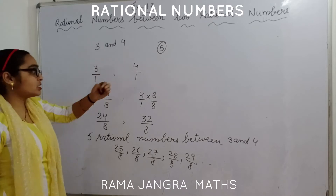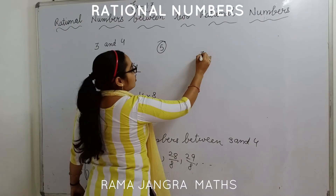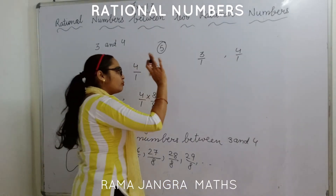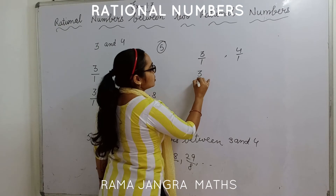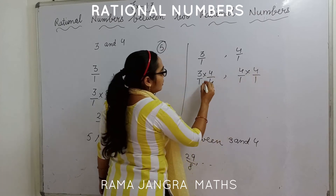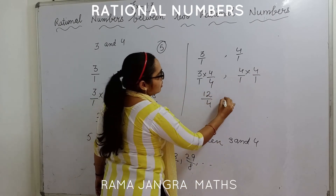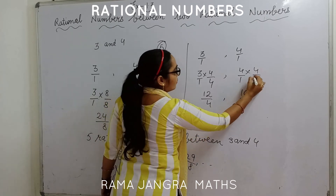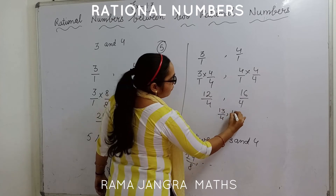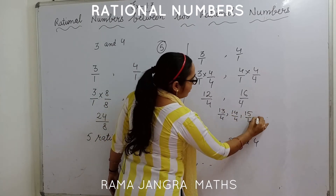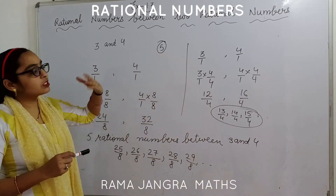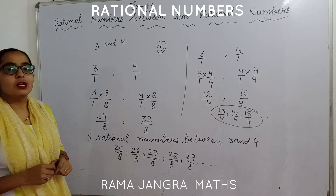I told you to multiply with a number greater than 5. Suppose 3 by 1 and 4 by 1 — you are multiplying with 4. So 4 by 4 gives 12 by 4 and 16 by 4. Now count how many numbers are there: 13, 14, and 15 — only 3 numbers. That's why I said you must multiply with a number greater than how many rational numbers you need to find.